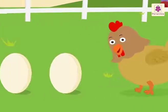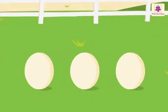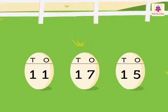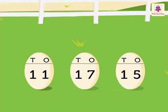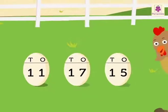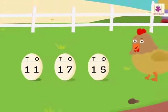Look at the eggs. Each egg has a number written on it in the form of tens and ones. The numbers are 11, 17, and 15. Let's arrange 11, 17, 15 in descending order with the help of Daisy, the hen.